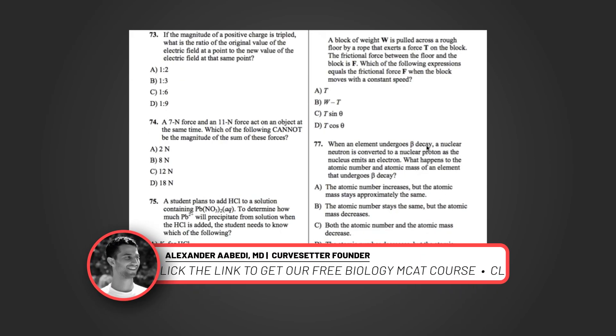So this question says, if the magnitude of a positive charge is tripled, what is the ratio of the original value of the electric field at a point to the new value of the electric field at that same point? What this question wants us to remember is the equation for an electric field due to a point charge. If you forget that, it's just Coulomb's Law, which is k times q1 times q2 over r squared, but it's divided by that second q, because an electric field emanates from a single charge distribution.